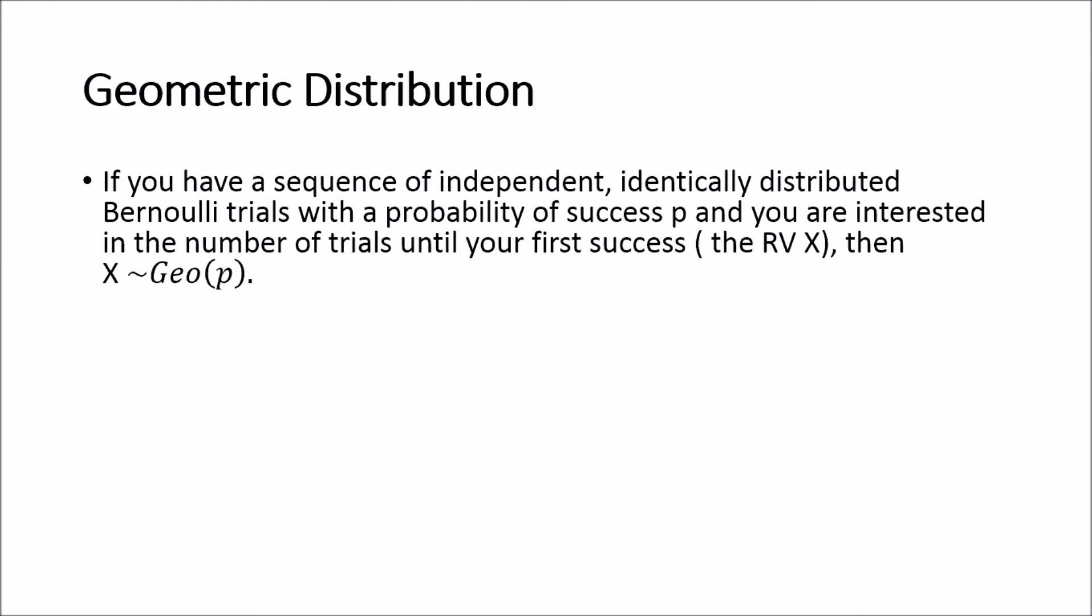So if we have a sequence of independent identically distributed Bernoulli trials with the probability of success p and you're interested in counting the number of trials until your first success, and we denote this as the random variable X, then X is said to be distributed geometrically with a success probability p.